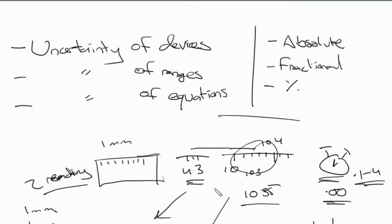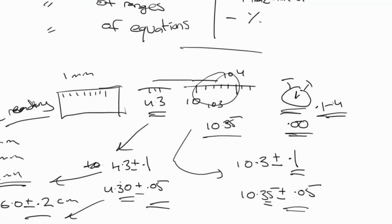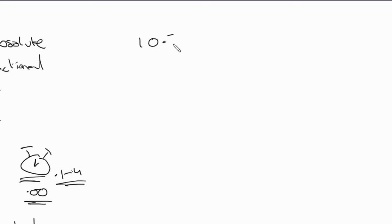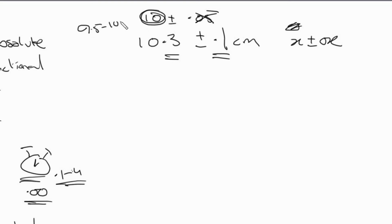Now let's talk about absolute, fractional, and percentage uncertainties. Absolute uncertainty has the same unit as the value - for example, 10.3 ± 0.1 centimeters, expressed as x ± Δx. When writing absolute uncertainties, the decimal places on both sides must be the same. If you give two decimal places in the value, the uncertainty must also be two decimal places, or else the uncertainty doesn't hold any meaning. Writing 10 ± 0.5 doesn't hold meaning either because the decimal places don't match.